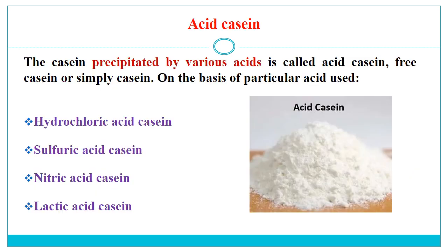Now we will talk about acid casein. The casein precipitated by various acids is called acid casein, free casein, or simply casein. Based on the particular acid used, it can be hydrochloric acid casein, sulfuric acid casein, nitric acid casein, or lactic acid casein.